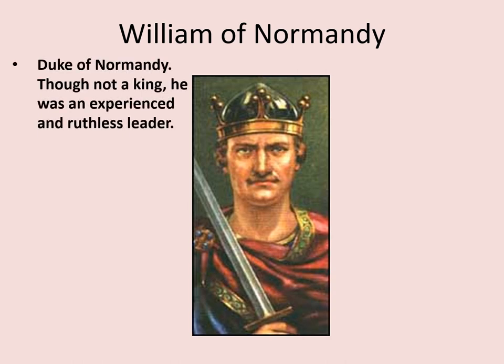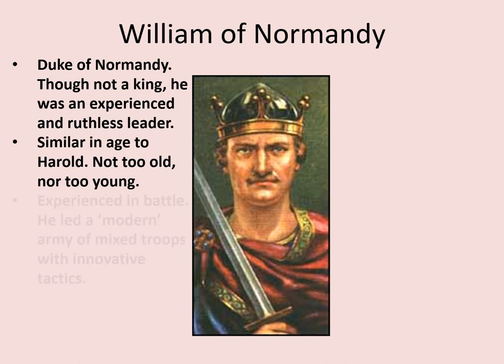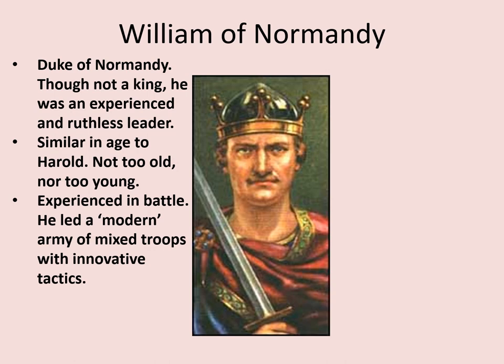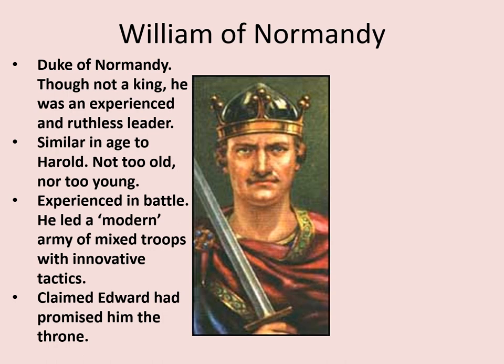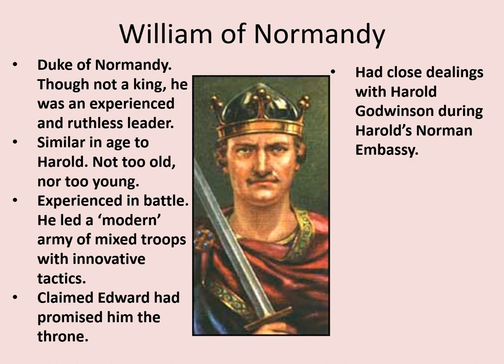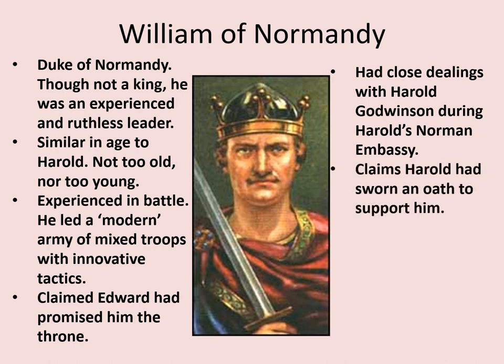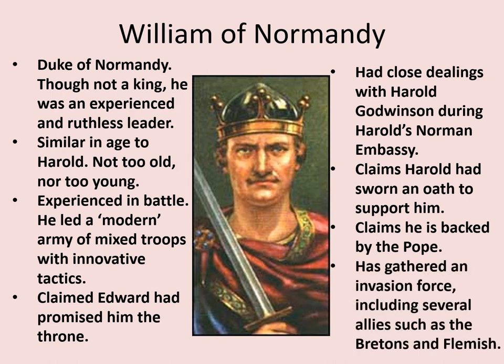William of Normandy, also known as William the Bastard, was Duke of Normandy. Though not a king, he was an experienced and ruthless leader, similar in age to Harold — not too old and not too young. He led a relatively modern army with innovative tactics: a mixture of archers, cavalry, and heavily armoured infantry. He claimed that Edward had promised him the throne some years earlier, and that Harold had sworn an oath to support him during Harold's Norman embassy. He also claimed backing from the Pope — significant, as it increased his support. He had gathered an invasion force including Breton and Flemish allies, and was poised to launch an invasion of the south coast.